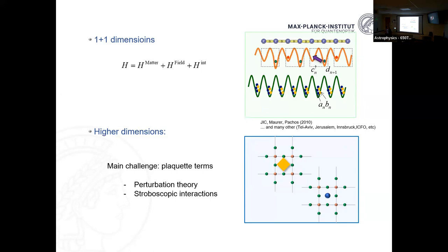You can get four-body interactions from two-body interactions via perturbation theory, but this requires working at fourth-order perturbation theory, where your small parameter must be raised to the fourth power — making it extremely small in practice. That's the current bottleneck for simulating gauge theories in more than one spatial dimension. To simulate a 2+1D lattice gauge theory with cold atoms, you need this four-body interaction, which is hard to achieve with sufficient strength.